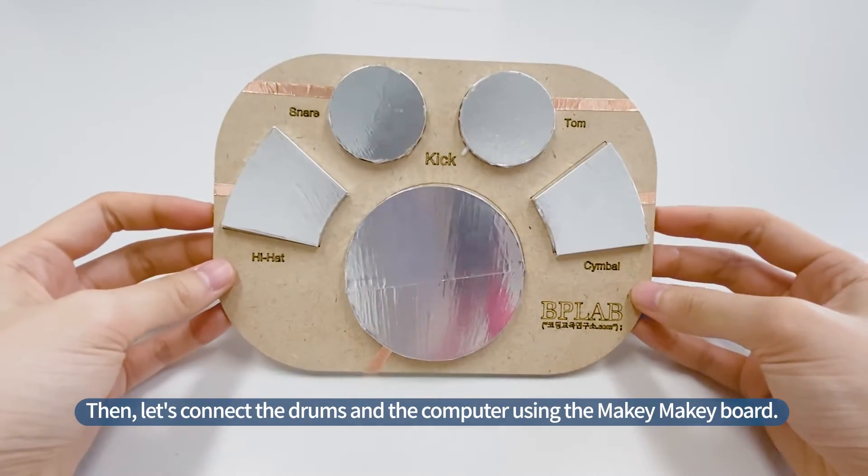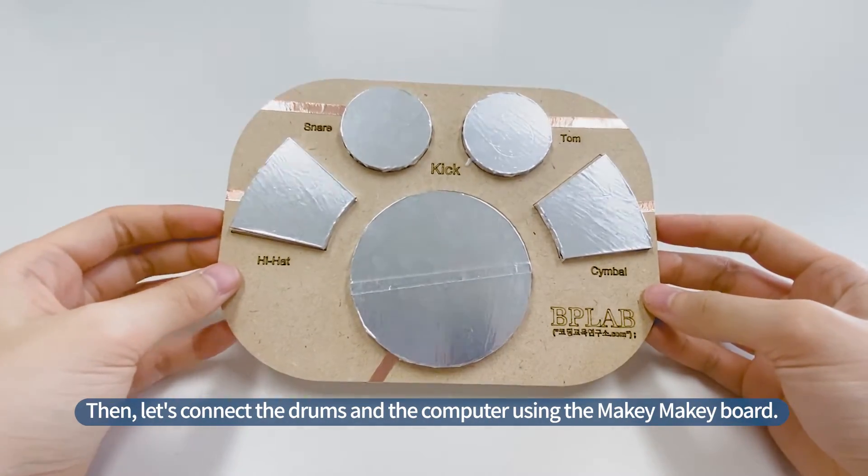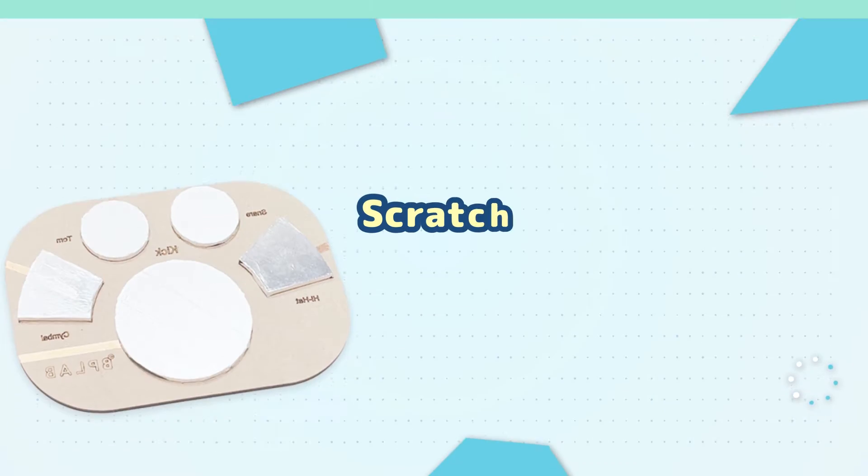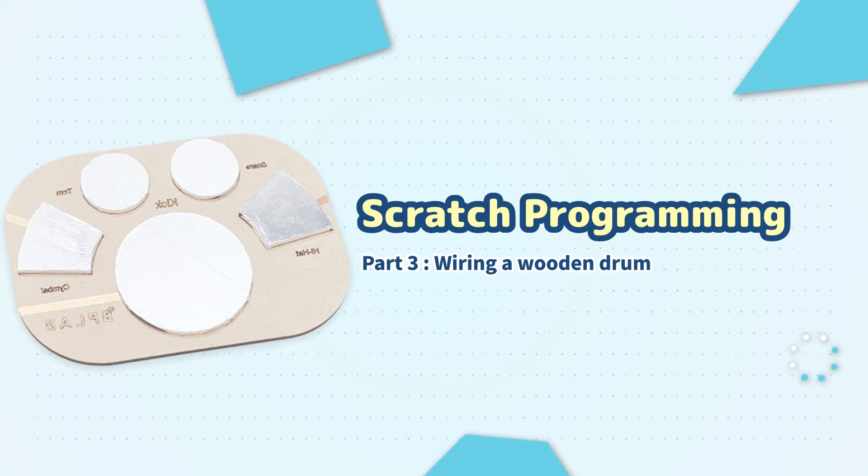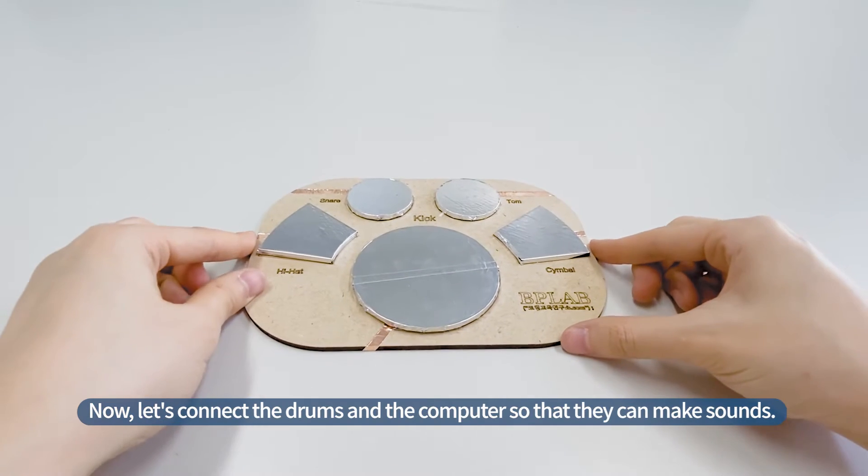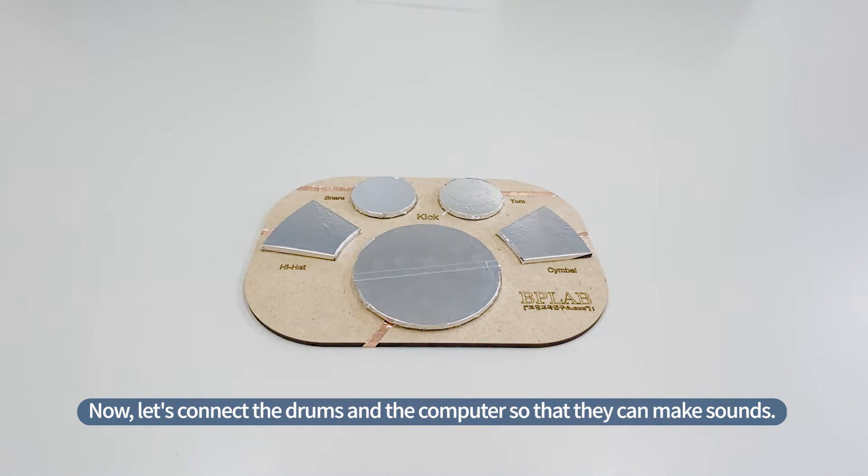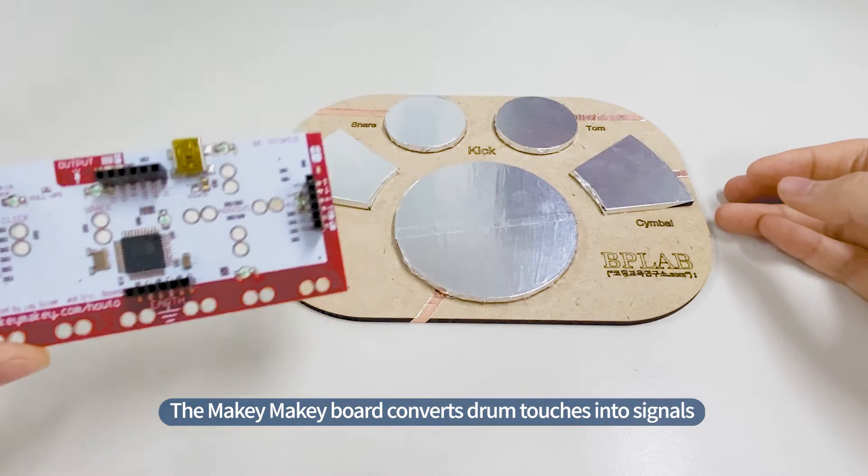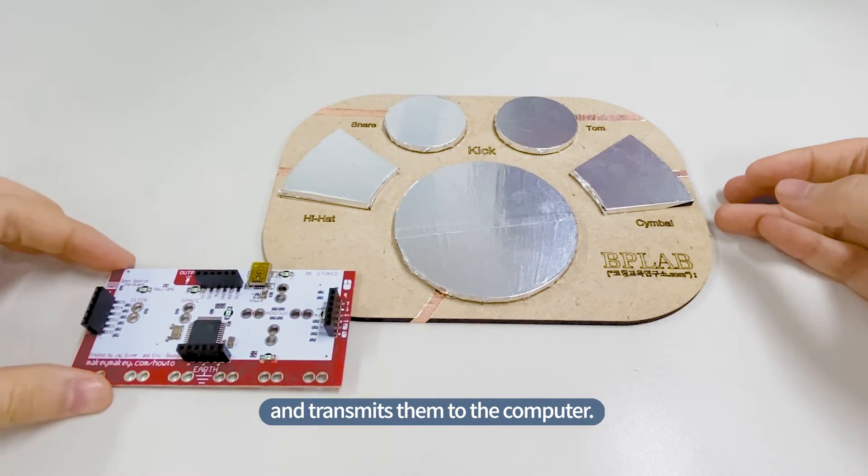Then, let's connect the drums and the computer using the makey-makey board. Now, let's connect the drums and the computer so that they can make sounds. The makey-makey board converts drum touches into signals and transmits them to the computer.